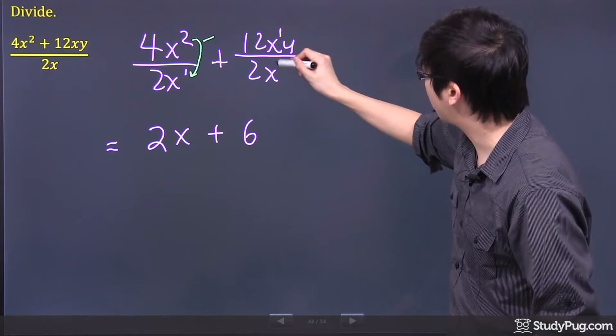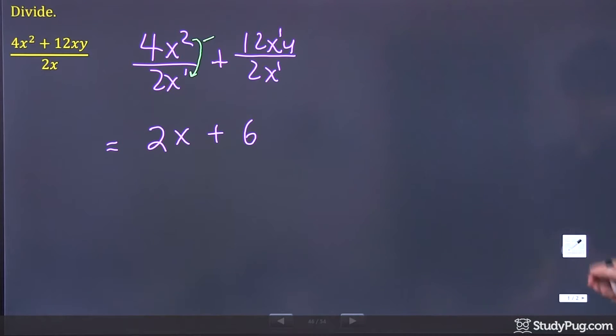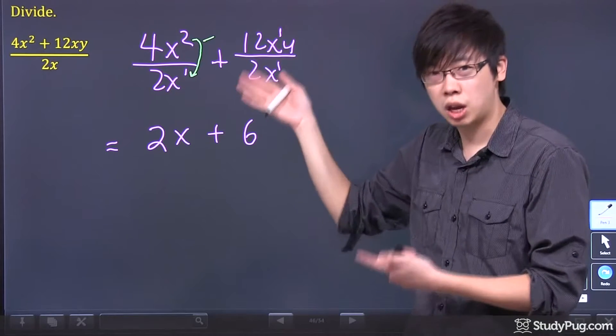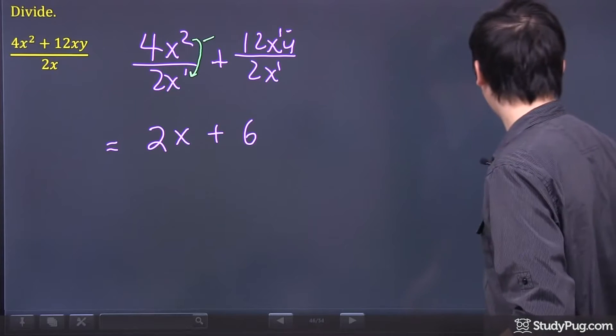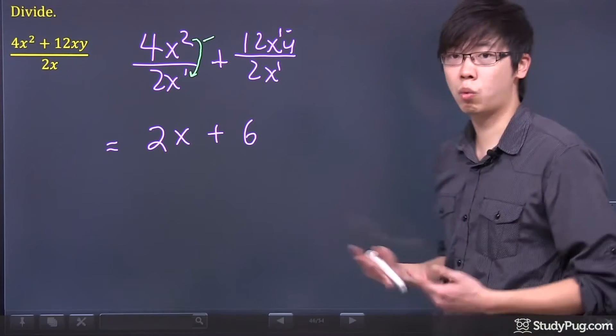Now this one right here, this is x to the power of 1. That's x to the power of 1. Now if you do the subtraction because they're the same variable, 1 minus 1 will give you how much? That's a 0, right? Anything to the power of 0 is simply just a 1. So you're just left with nothing.